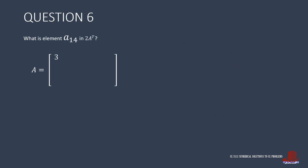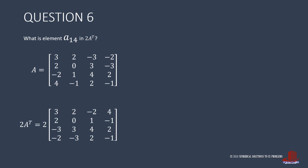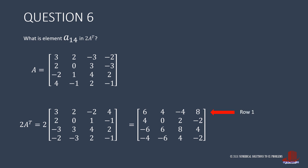The next question is element A[1,4] of twice of A transpose. So it is possible to either take the transpose first or multiply each element by 2. In this case, we take the transpose first, then multiply all elements by 2. We focus on row 1, column 4, which points to 8. With the same operation, we also take element A[4,1]: identify row 4 and column 1 to give negative 4.